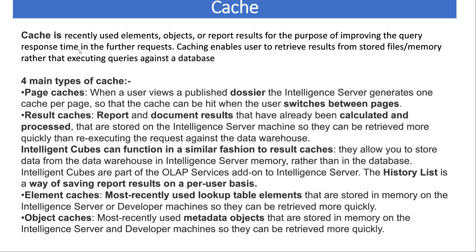Result cache can be multiple types. It can be report cache, it can be document cache. Under the report cache, many people will say there is something called XML cache. For that matter, if somebody asks you, intelligent cube also works in the same way. The thing you need to know is intelligent cube basically allows you to store the data from your data warehouse and completely put that into the intelligent server memory. Intelligent cube is a separate aspect and functionality of MicroStrategy that basically fetches all the records and puts them into the cube.